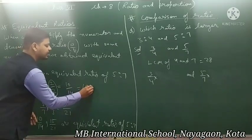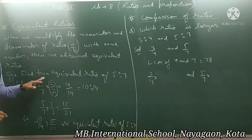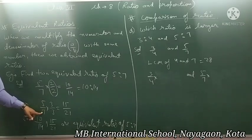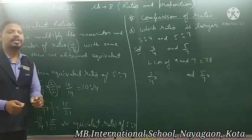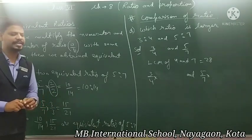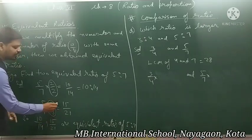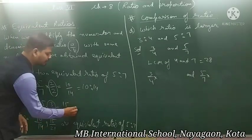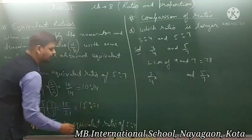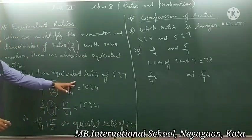10 ratio 14 is the equivalent ratio of 5 ratio 7 — yeh pehla equivalent ratio nikal liya. Ab second equivalent ratio nikalenge. Again 5 upon 7 likh diya, iske numerator ko bhi 3 se multiply kar diya aur denominator ko bhi 3 se multiply kar diya, kyunki equivalent ratio nikalne ki yeh condition hai — numerator aur denominator ko same number se multiply kiya jaata hai. To 5 ko 3 se multiply karenge — 5 into 3 that is 15, and 7 into 3 that is 21. Means 15 upon 21, aur isko 15 ratio 21 is the equivalent ratio of 5 ratio 7.